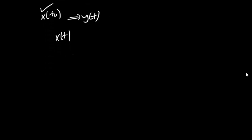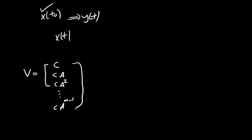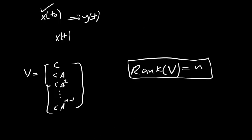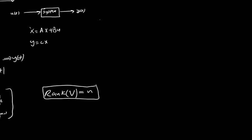There is a mathematical way to determine if a system is observable. We define an observability matrix V equal to [C; CA; CA²; ... ; CA^(N−1)], where N is the order of the system. If the rank of V equals N, then the system is observable. If the rank is less than N, the system is not observable.